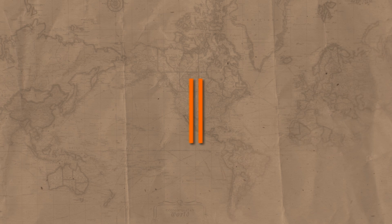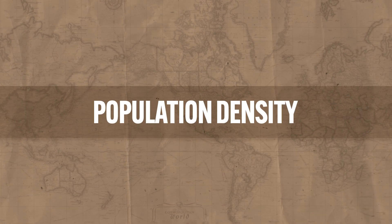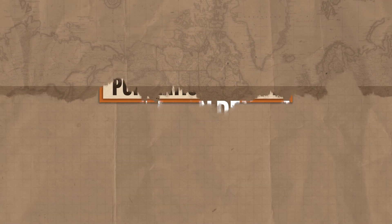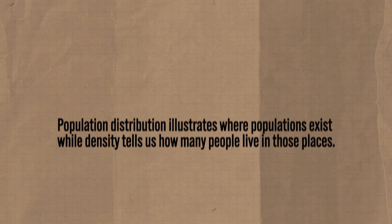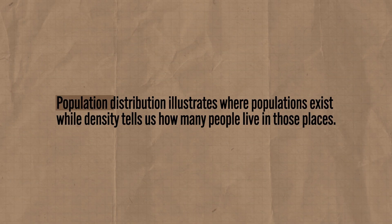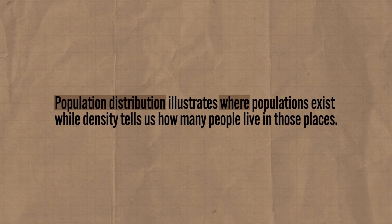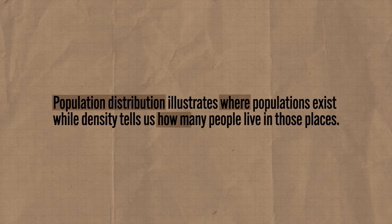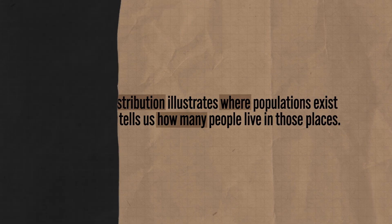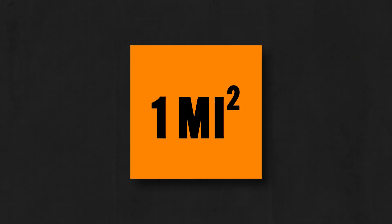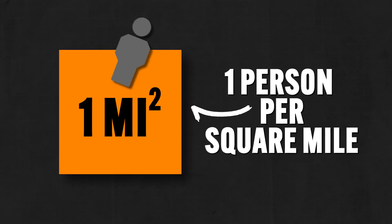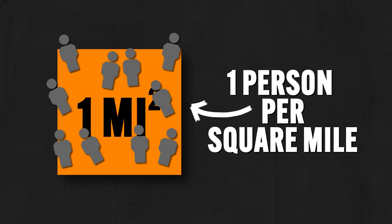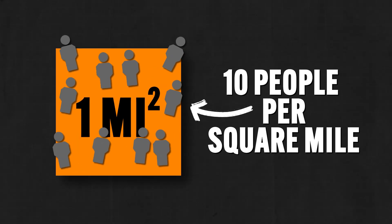Now let's talk about population density, which is the measure of how many people occupy a given unit of land. Don't get confused: population distribution illustrates where populations exist, while density tells us how many people live in those places. So if you have one square mile and one person that lives there, that's a density of one person per square mile. But if you have ten people living there, the density is ten people per square mile. Easy peasy mac and cheesy.